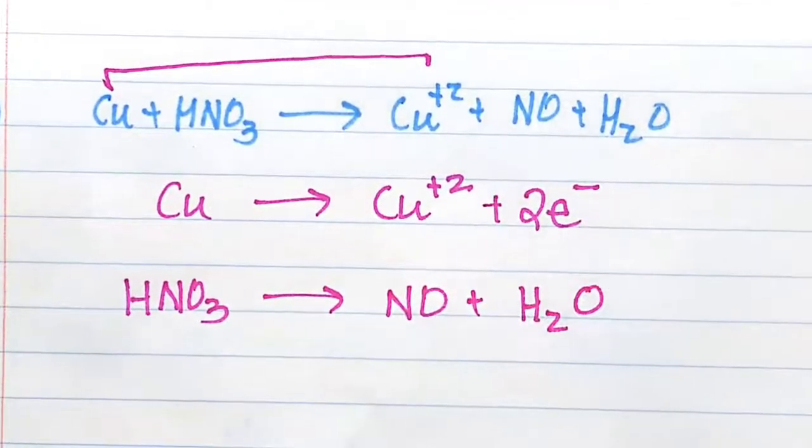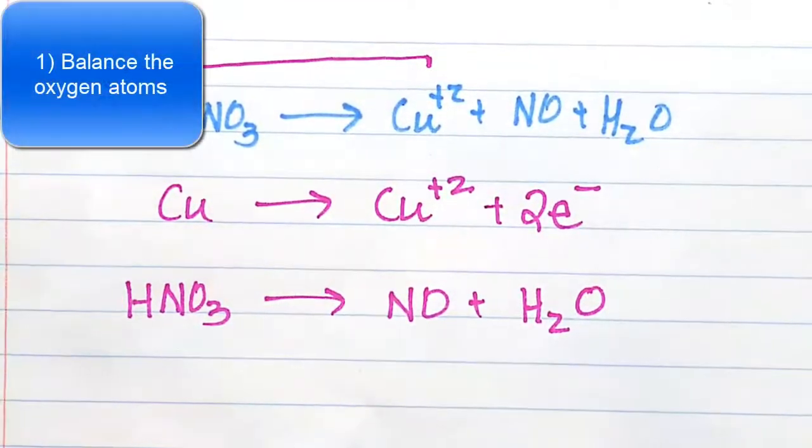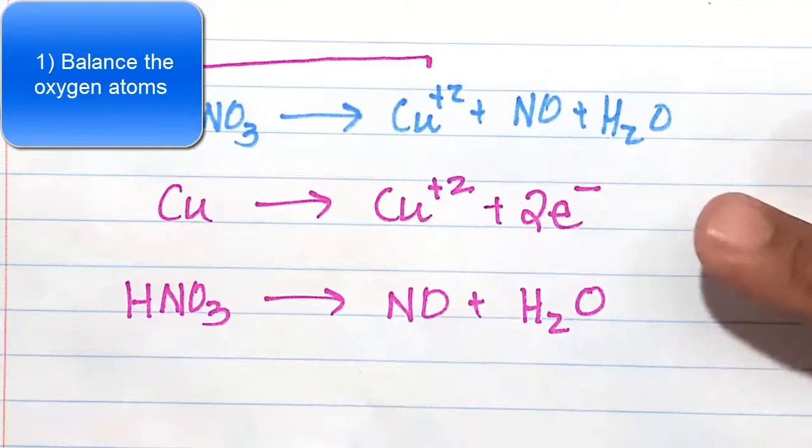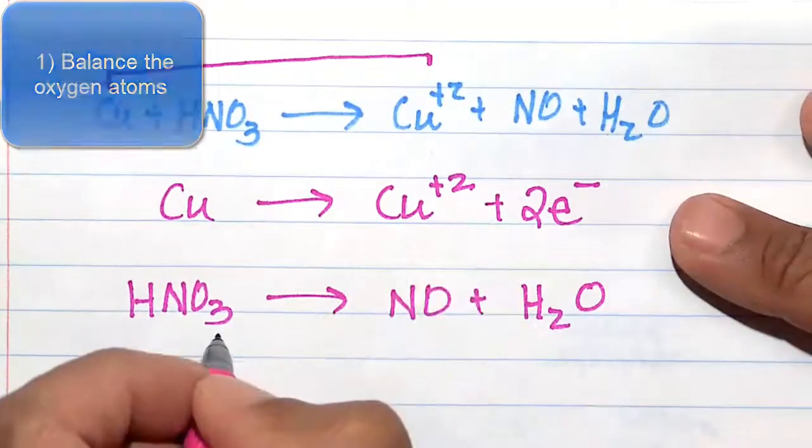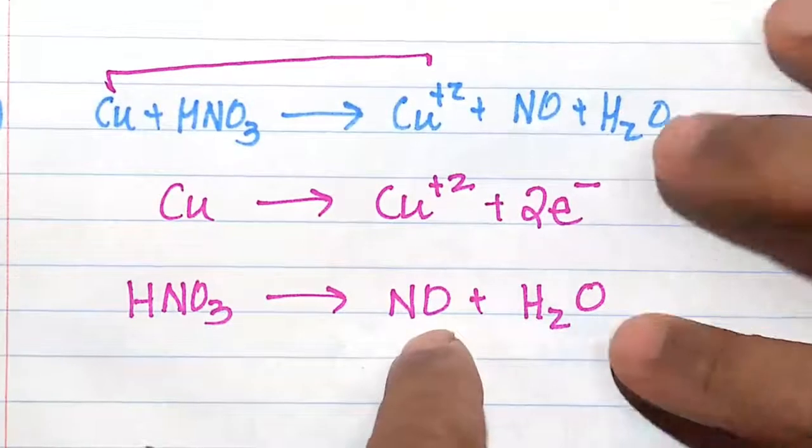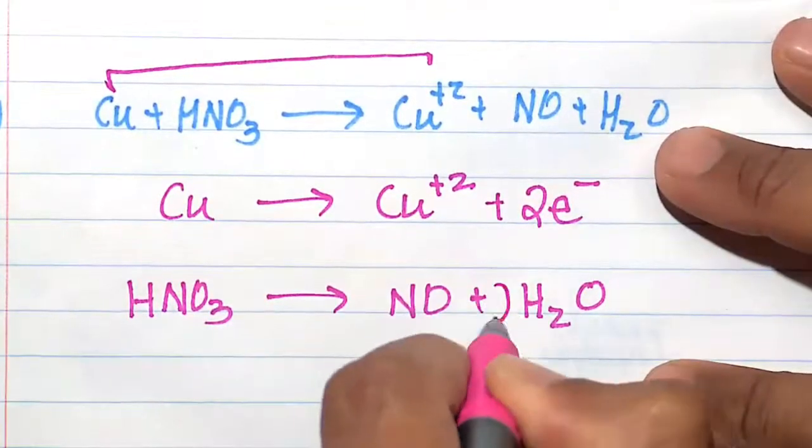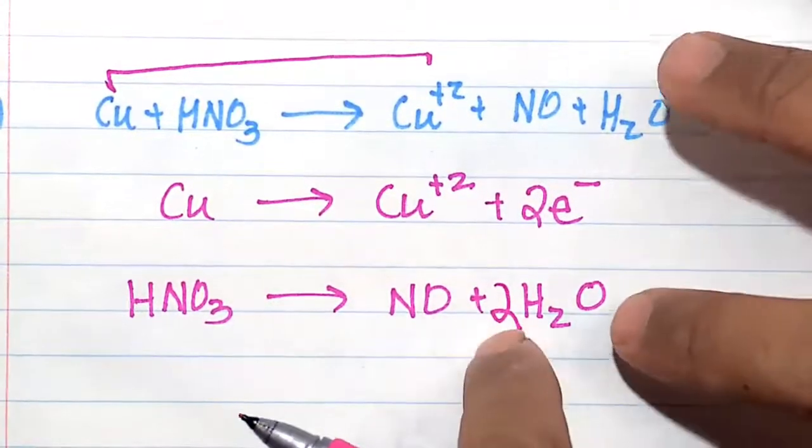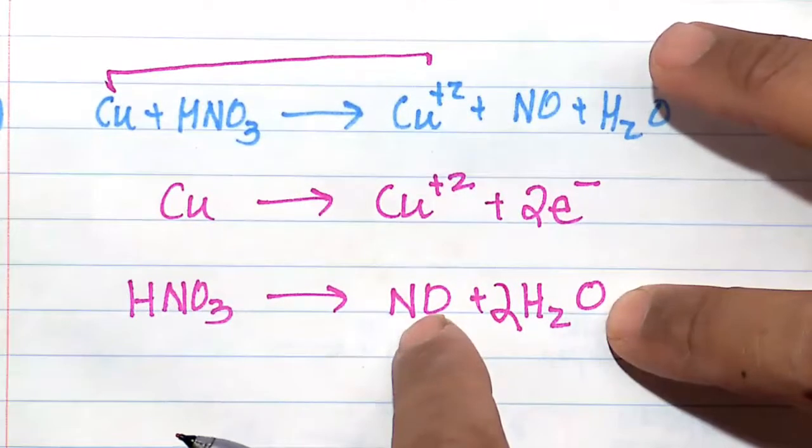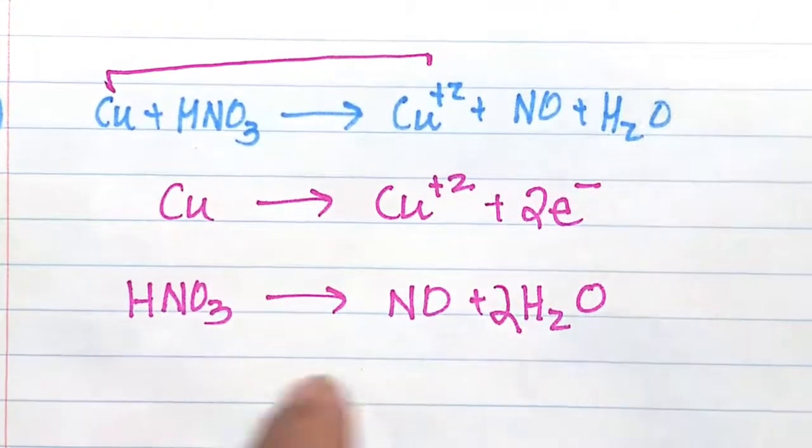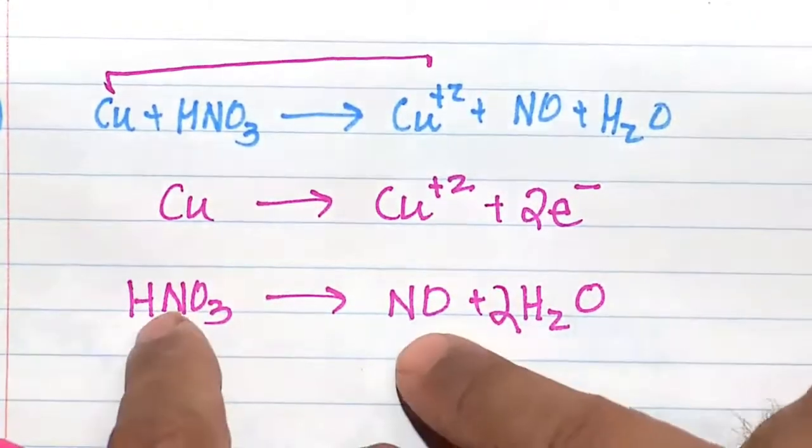So how will we balance this? First, remember we have H⁺ also on our side. I would go ahead and balance the oxygens first. We have 3 oxygens. 1 plus 1 here is 2, but if I put a 2 in front of the water, 2 oxygens plus 1 oxygen is 3 oxygens, and I balance my oxygens. My nitrogens are balanced.